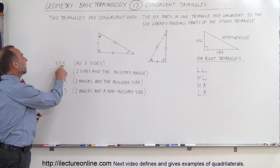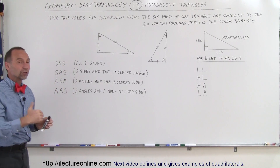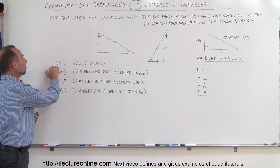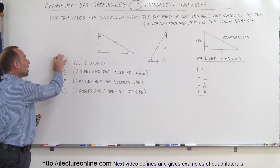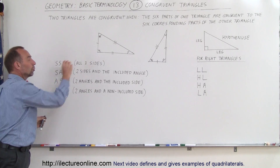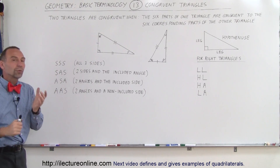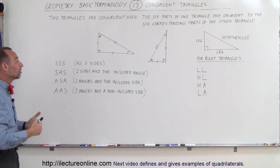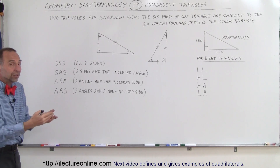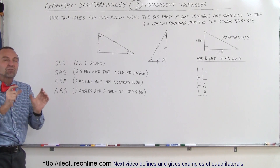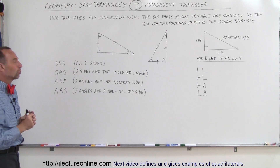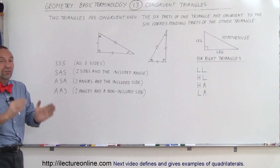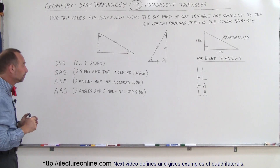The first case is SSS, standing for the three sides. If the three sides of one triangle are congruent to the corresponding three sides of the other triangle, then the triangles must be congruent. So it is sufficient to show that all three sides are equal.